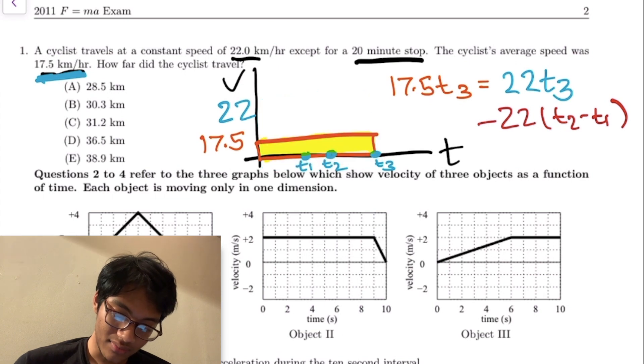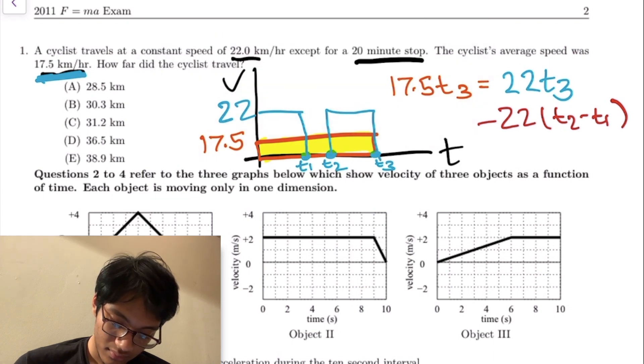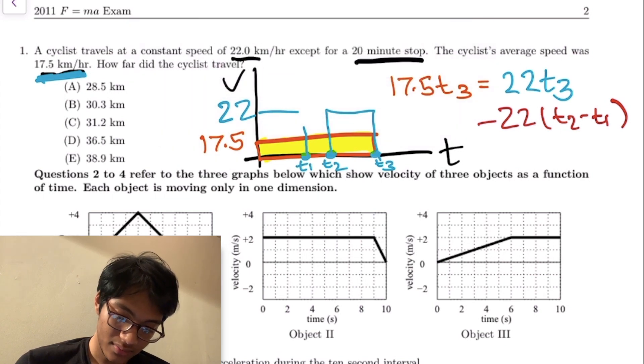This eraser is way too big, but hopefully you get my point. Do we actually know what t2 minus t1 is? Yes we do. t2 minus t1 is 20 minutes, which is just a third of an hour, so I can just write one third over here.